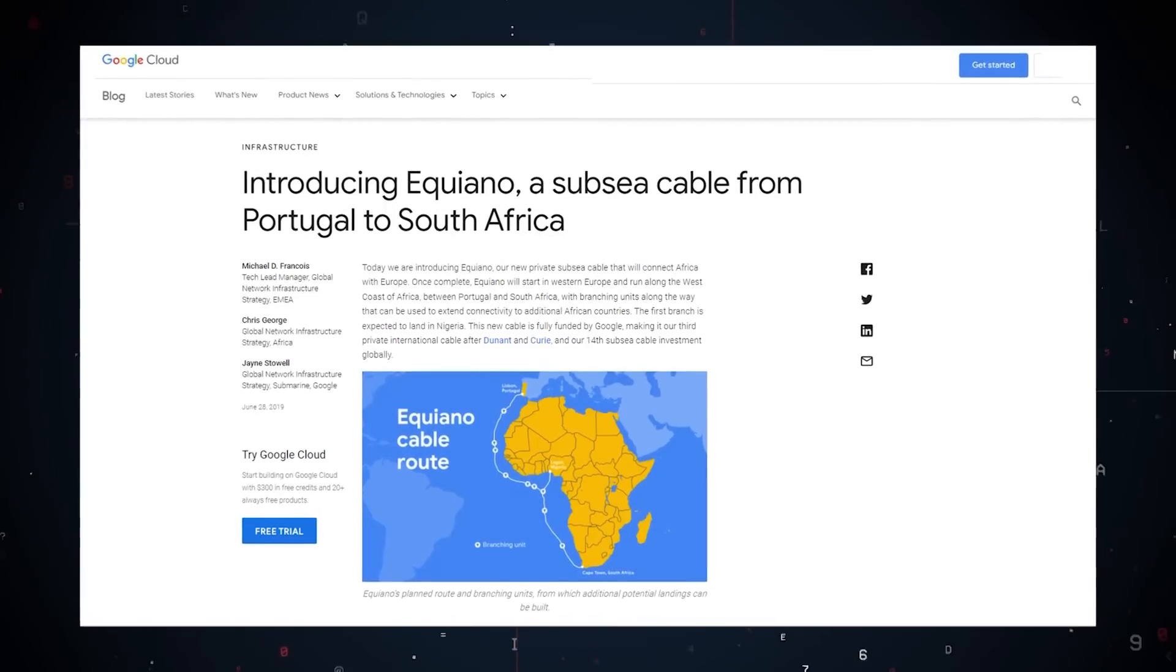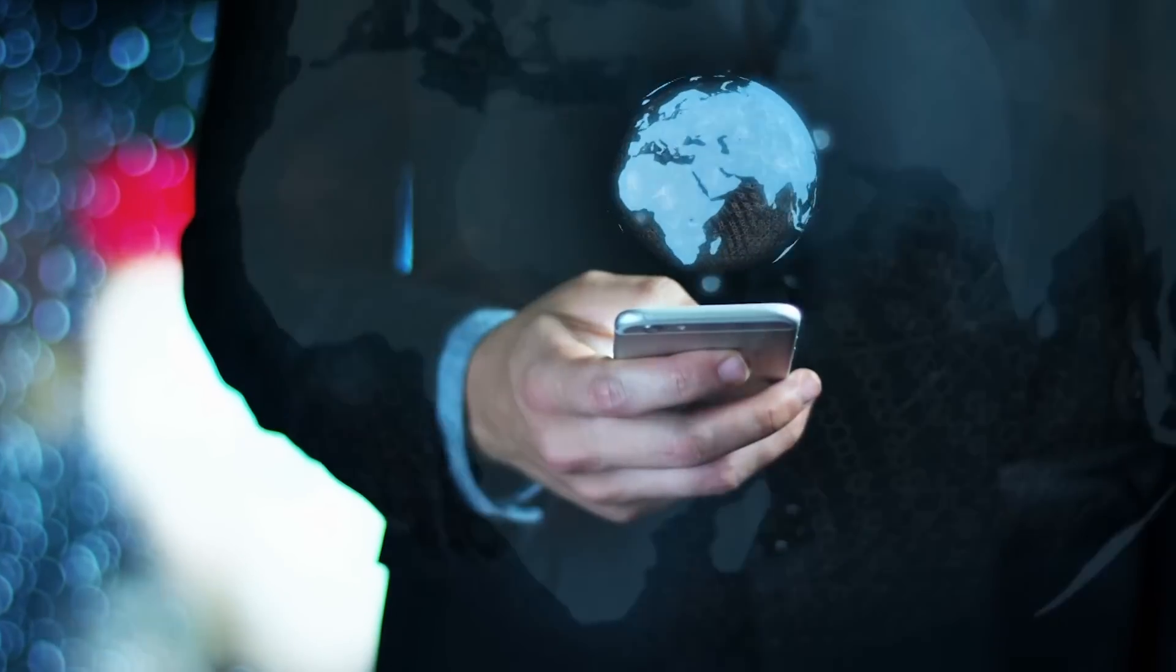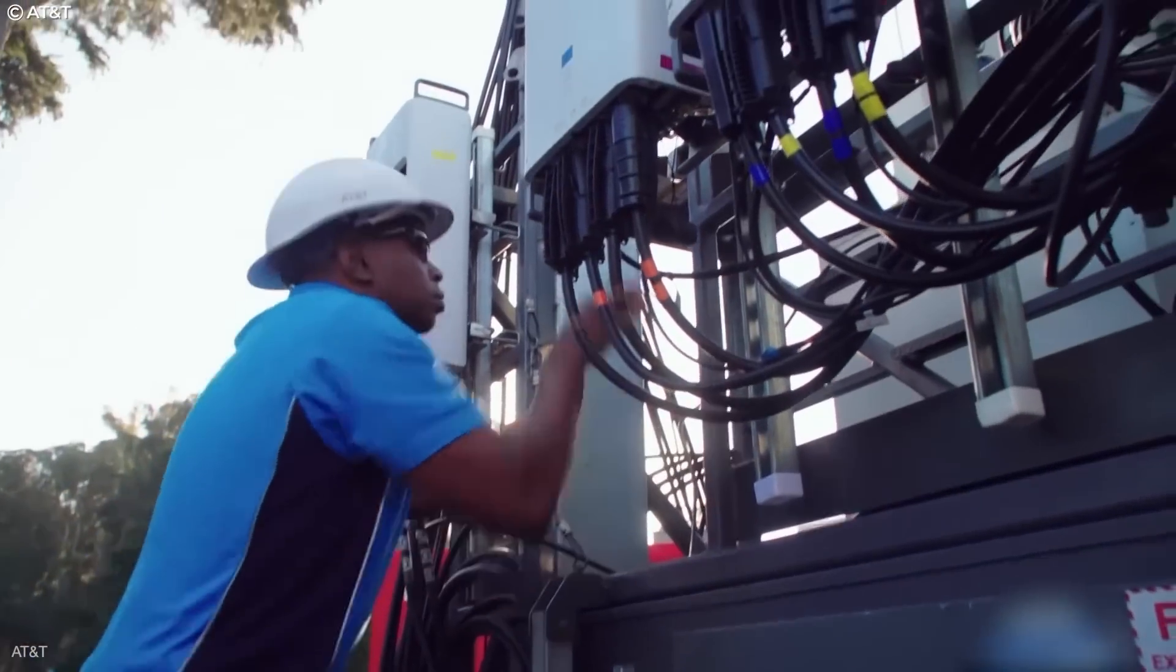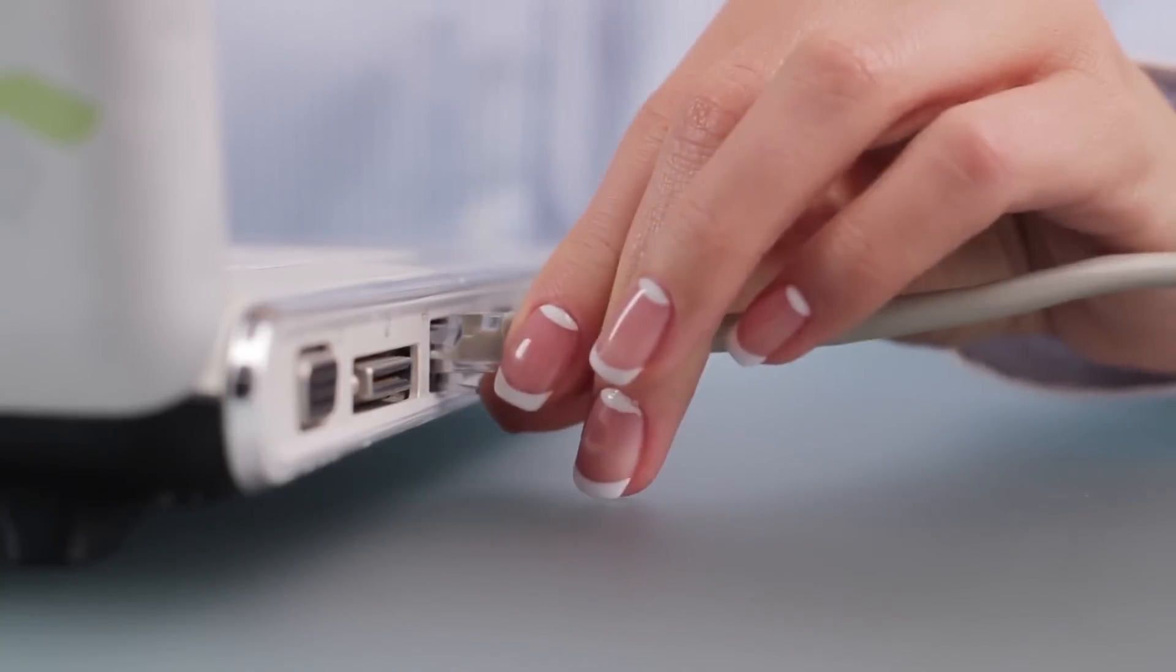Similarly, Google has also recently confirmed its high-speed subsea cable project, Equiano, which will run from Portugal to South Africa, connecting Nigeria along the way. Of course, this does not mean that you, the end user, will get this speed anytime soon, but it would definitely allow your internet service provider to up their game and offer even faster speeds and more reliable connections.